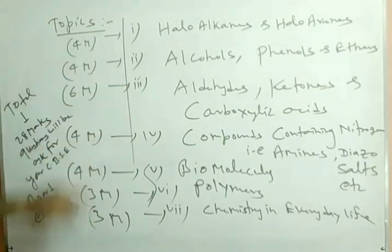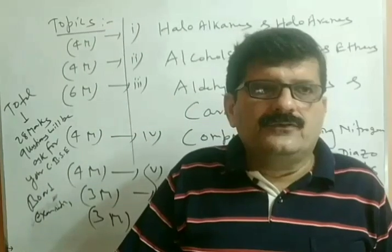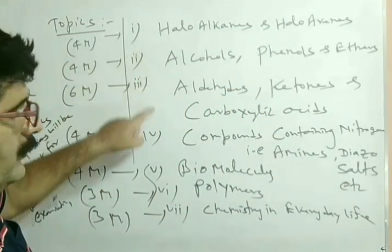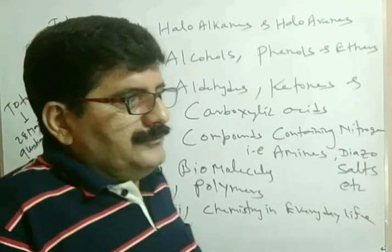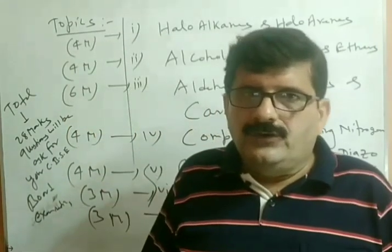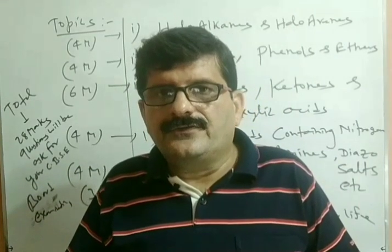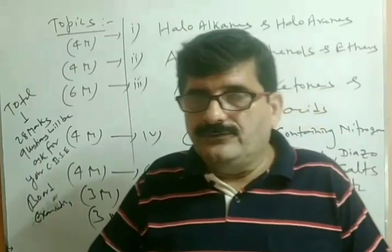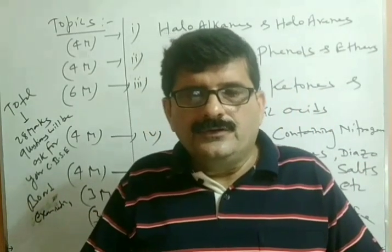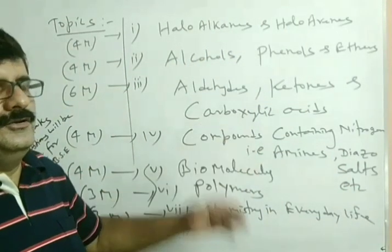Lesson first to fourth is totally based upon your 11th class organic chemistry syllabus. For understanding lessons one to four, first you need to know the nomenclature of organic compounds, second isomerism, and the third vital topic is reaction mechanism. So in nutshell, if you have knowledge of nomenclature, isomerism and reaction mechanism, then you can understand all such lessons very smoothly.